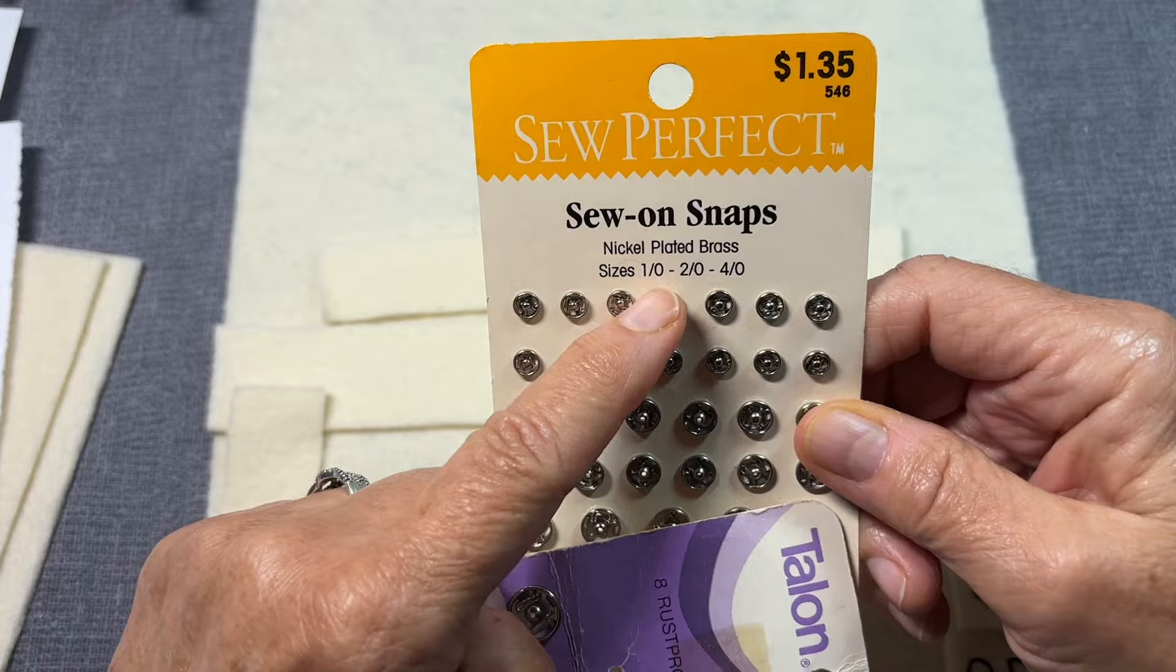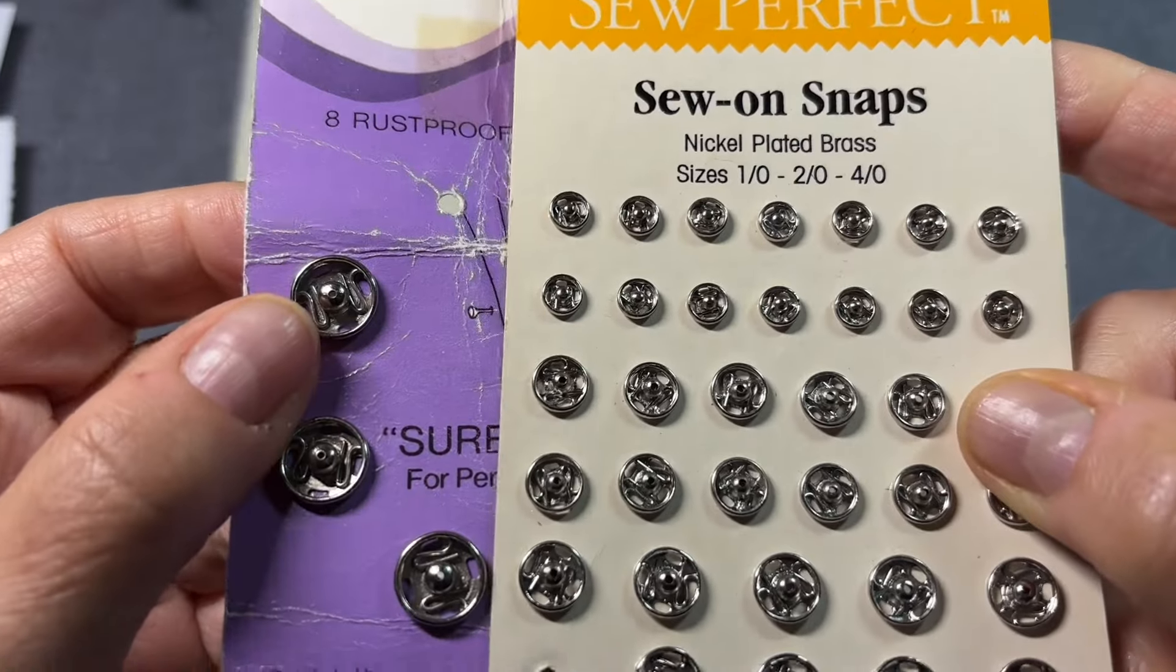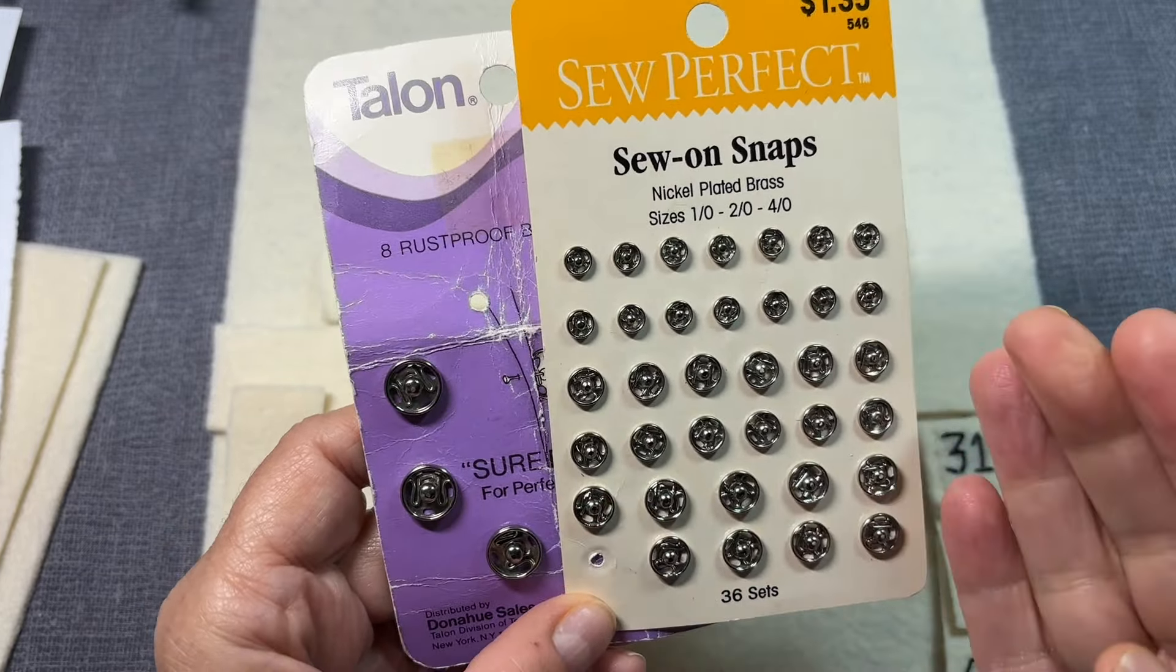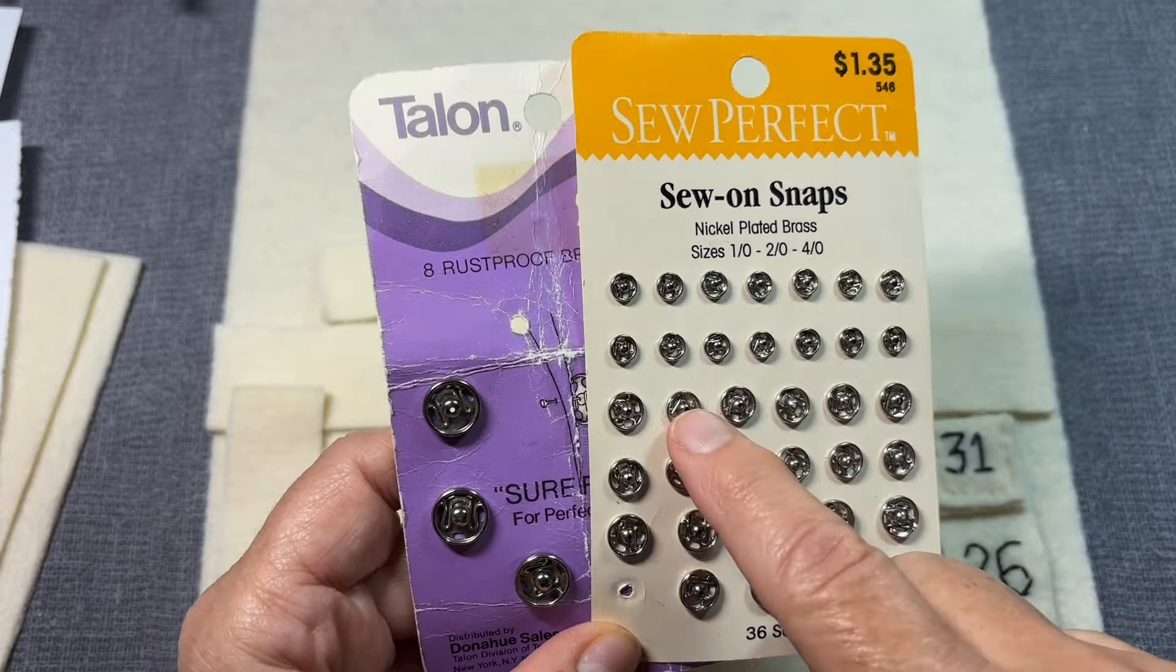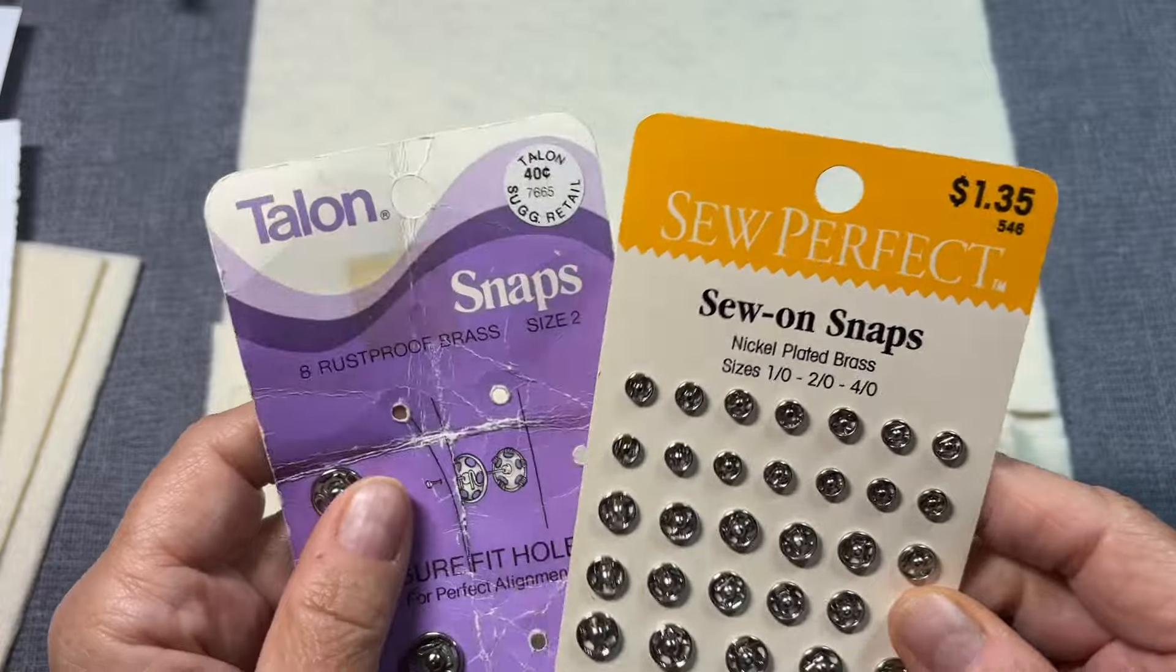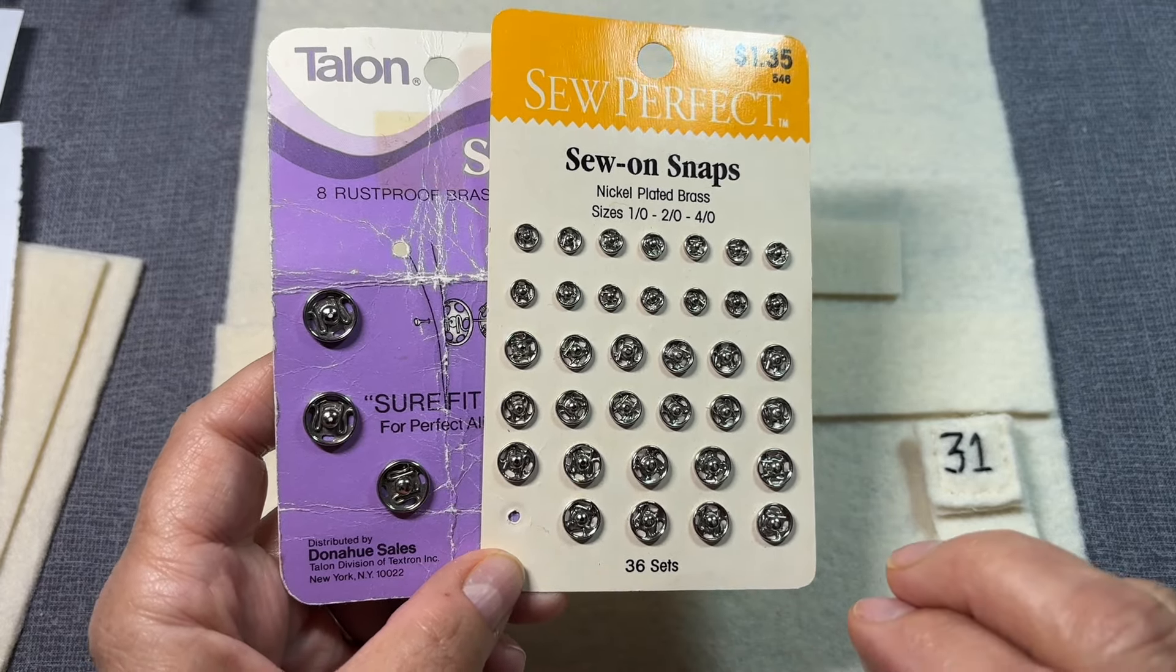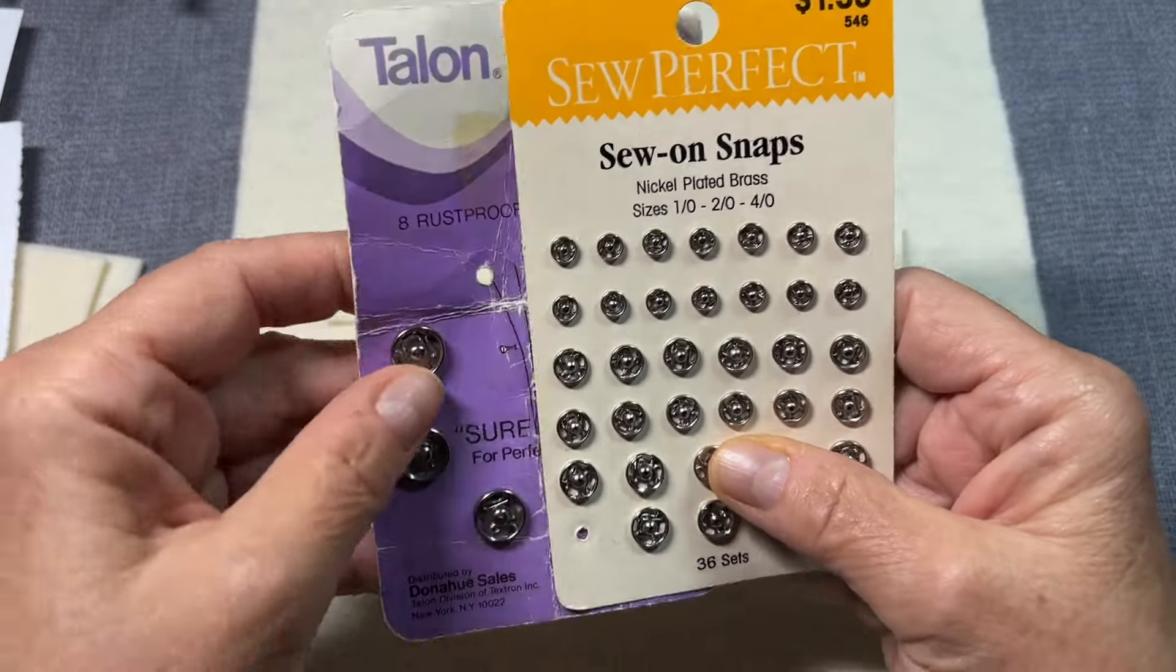This says size 1-0, 2-0, and 4-0. This says size 2. There is nothing the same about these two things. So, I don't know sizes. I tried to measure. I used millimeters again. Or maybe it's centimeters. See, I don't understand it. I understand eighths and sixteenths and quarters and inches and halves. But when you look online, that's not how they come.